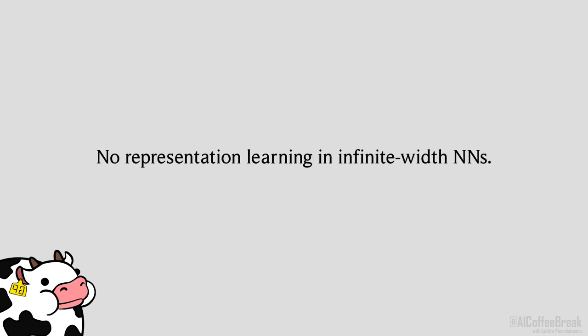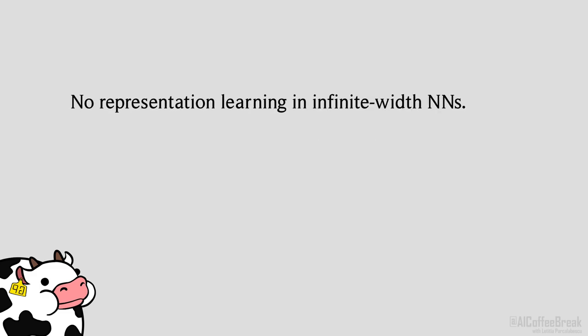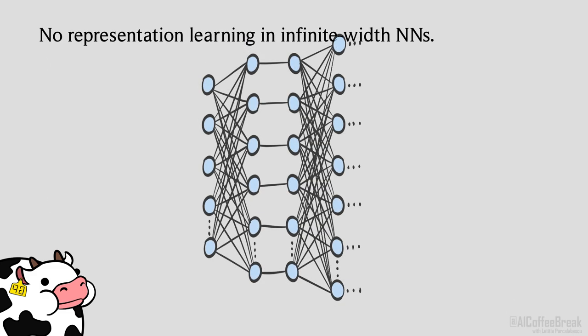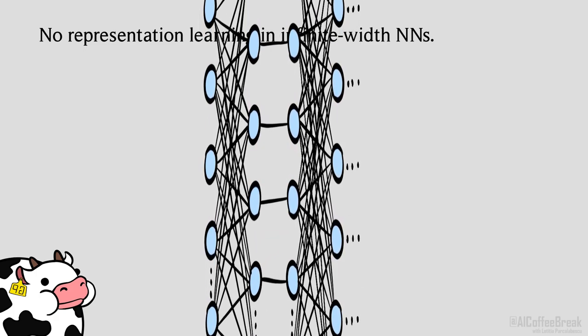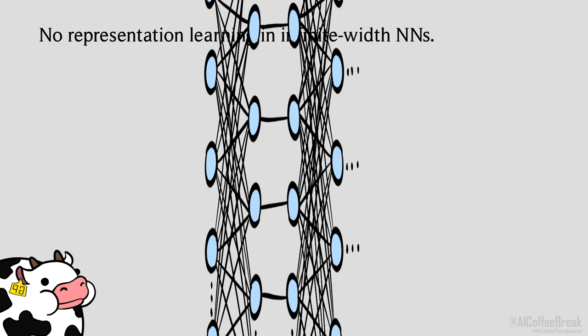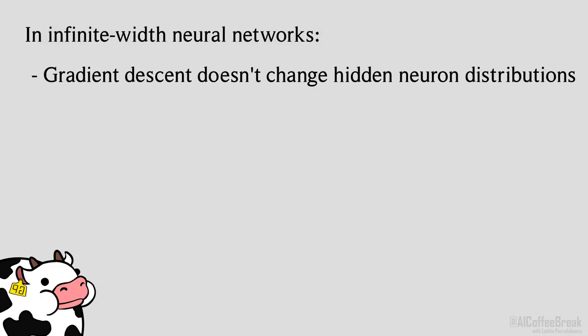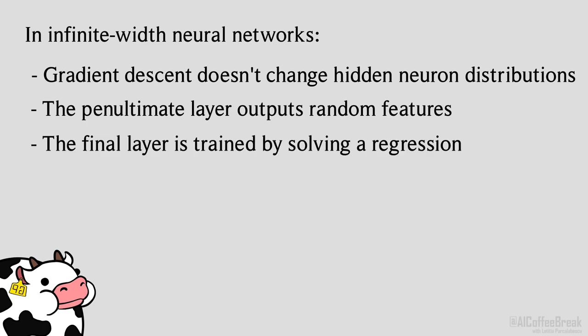The other thing that the infinite-width network cannot do is representation learning. When a finite-width neural network is trained, the distribution of neurons in the hidden layers will evolve, meaning they learn non-random internal features. But in the infinite-width limit, this process gets washed out, meaning the distributions before and after a step of gradient descent are equal. In such models, the second-to-last layer outputs a set of random features, and the output layer is basically a linear model that is fitted on these. It therefore doesn't matter how many layers it has, which completely defeats the whole point of deep learning. We also wouldn't have had to bother with SGD, since training the network has been reduced to a simple linear regression problem for which there is a closed-form solution.